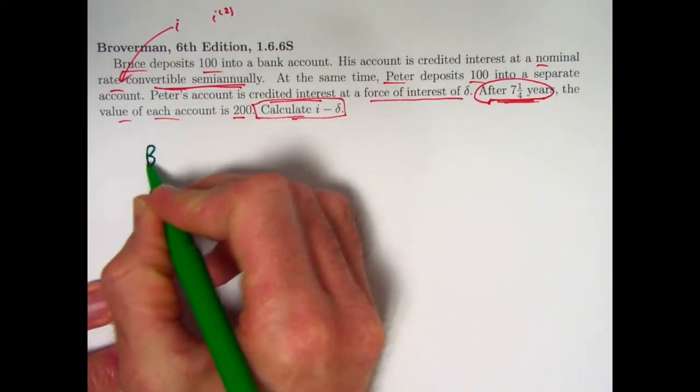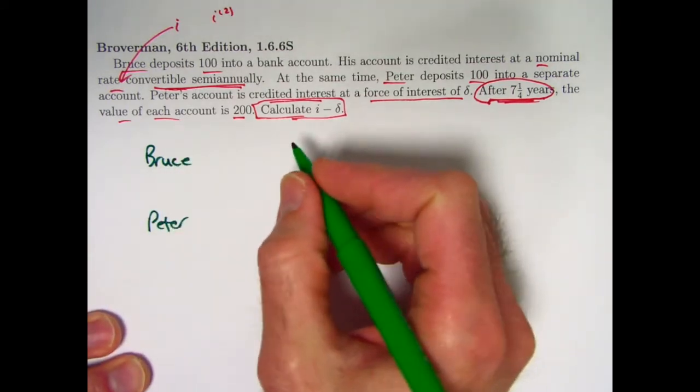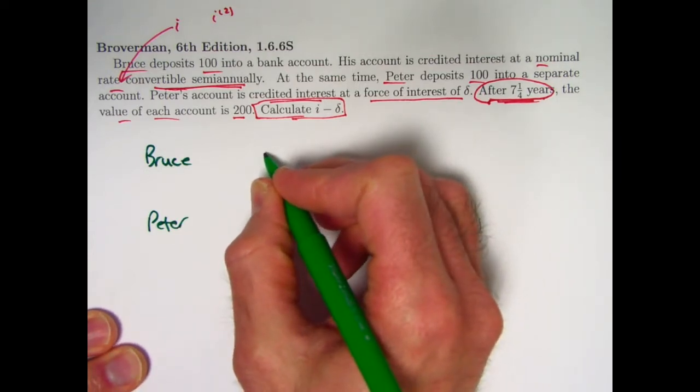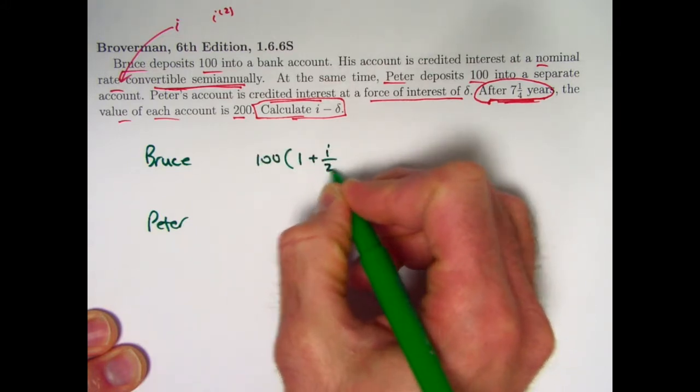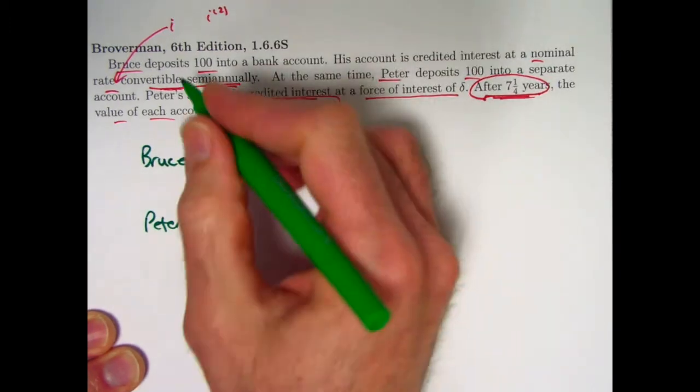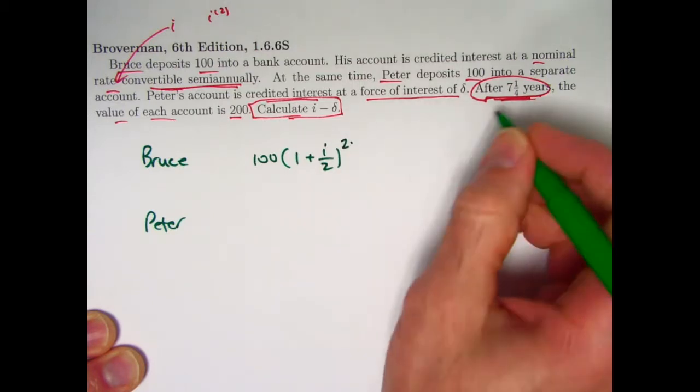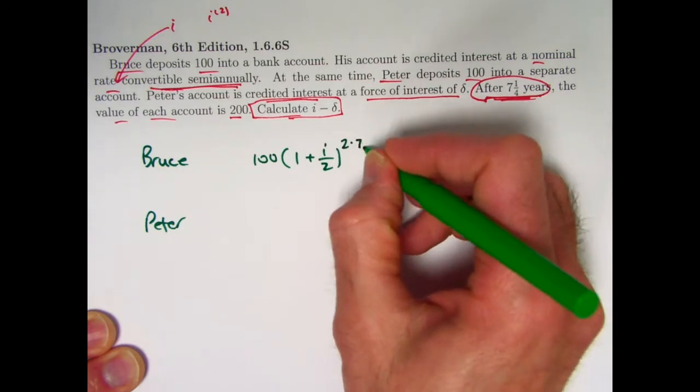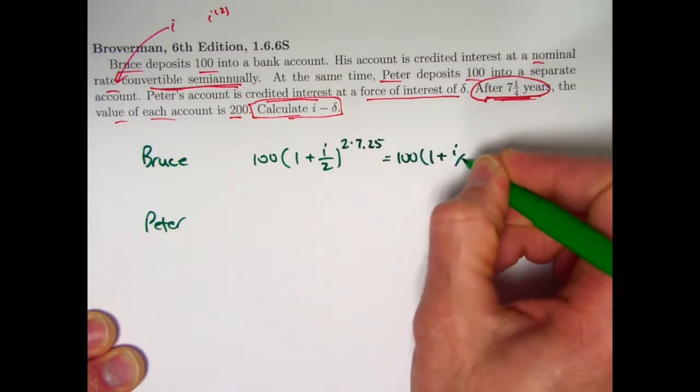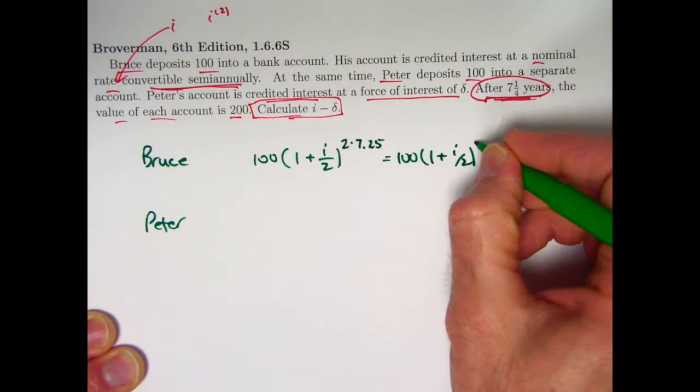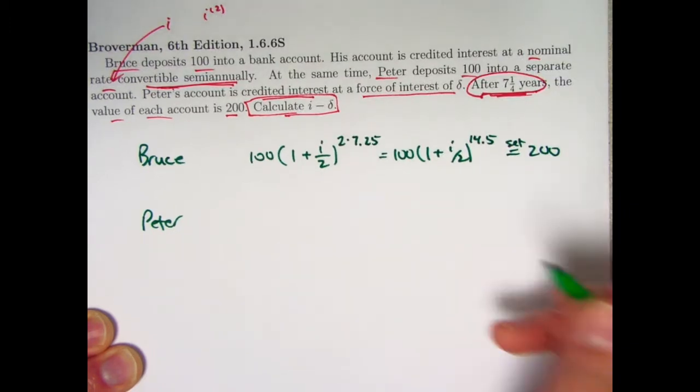All right. So let's separate it here. You've got Bruce and you've got Peter. What's an expression for the future value of Bruce's account? As a function of time, it's going to be 100 times 1 plus i over 2. i is, yes, this nominal interest rate convertible semi-annually, to the 2 times the number of years, 2t if you like. Okay, let's go ahead and plug in the 7 and a quarter years right away. 7.25. This simplifies a bit. I guess I'm just going to simplify the exponent. 2 times 7.25 is going to be 14.5. Set this equal to 200. And we're going to be able to solve that equation for i.